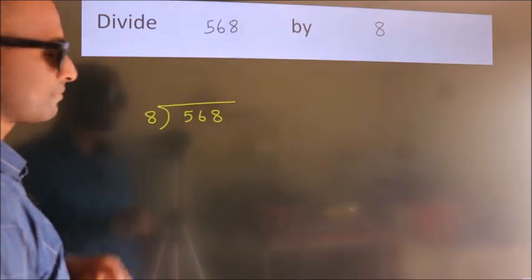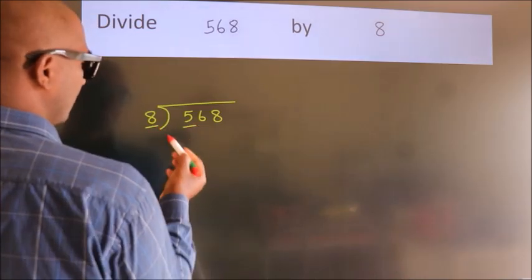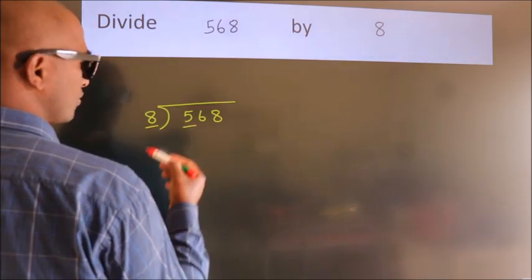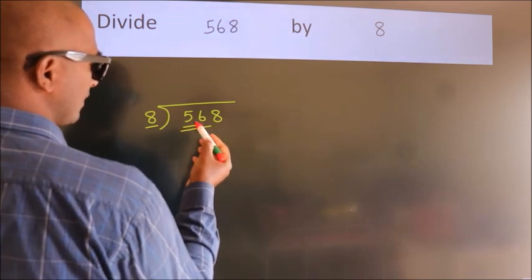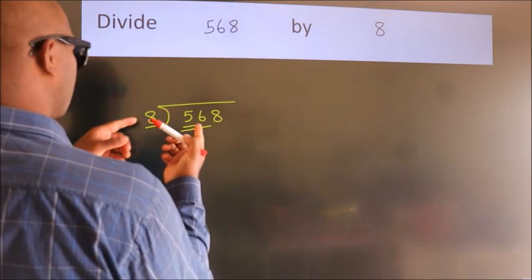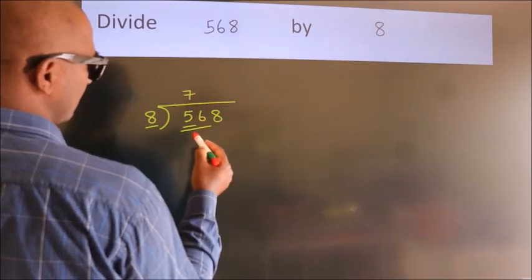Next, here we have 5, here 8. 5 is smaller than 8, so we should take 2 numbers: 56. When do we get 56? In the 8 table. 8 times 7 is 56.